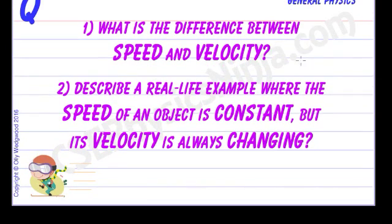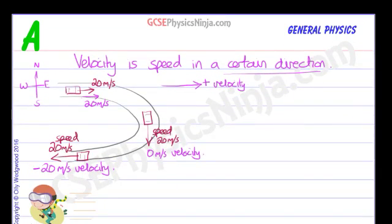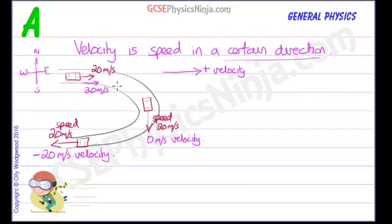So how can we have a real life example where the speed of an object is constant, but its velocity is always changing? Well, you might have guessed that it's something similar to this, where the direction is changing and the direction is always changing. So how could we do that?